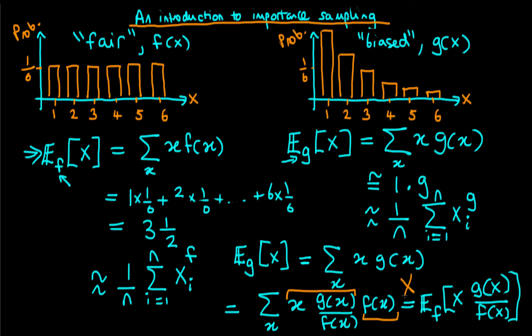Because I'm now taking the expectation with respect to the fair die, I can throw the fair die repeatedly and approximate this expectation just as before. The approximation is one over n times the sum from i equals one to n of x_i times g of x_i over f of x_i. So as long as I can evaluate the ratio of the densities for any given integer value of x between one and six, I can estimate the mean of the biased die by throwing only the fair die.